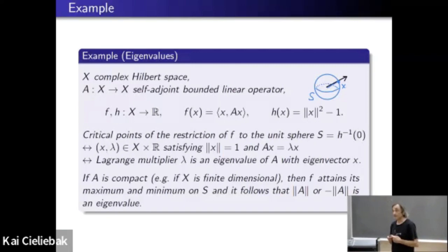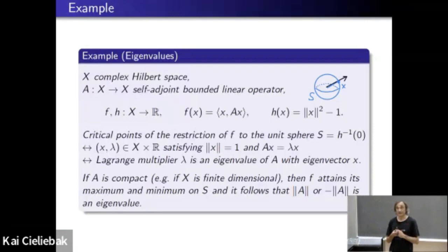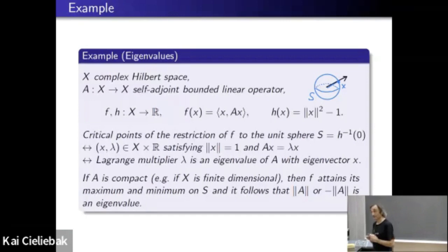If A is compact, or if the space x is finite dimensional, then the unit sphere — which is the level set of h — is compact, and then f attains its maximum and minimum on it. So it does have critical points, which means such an operator has an eigenvalue. This gives a nice analytical proof that every symmetric matrix has an eigenvalue.